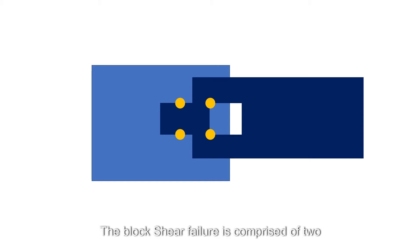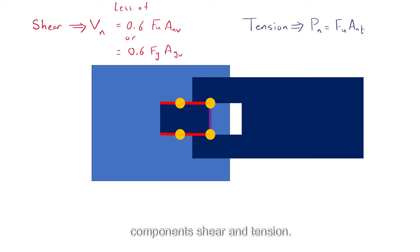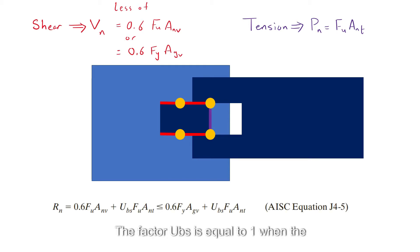The block shear failure is comprised of two components: shear and tension. The shear strength will be the lesser of yielding and rupture and for tension it will just be rupture. This makes the total strength of the connection in block shear as follows. The factor UBS is equal to 1 when the tension stress is uniform, such as in angles, gusset plates, and most coped beams, and equal to 0.5 when the tension stress is non-uniform. Also note that A sub N is the net area and A sub G is the gross area.